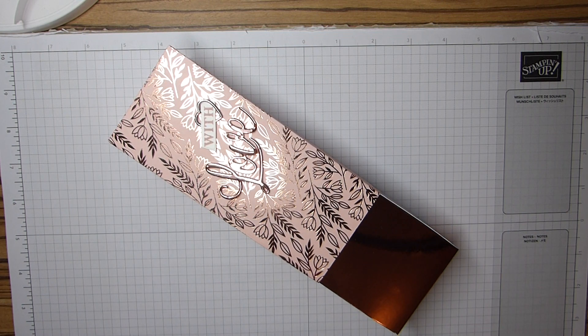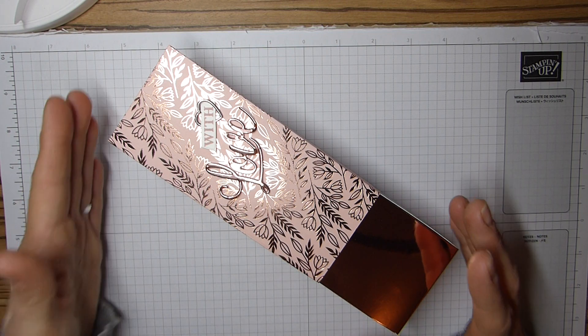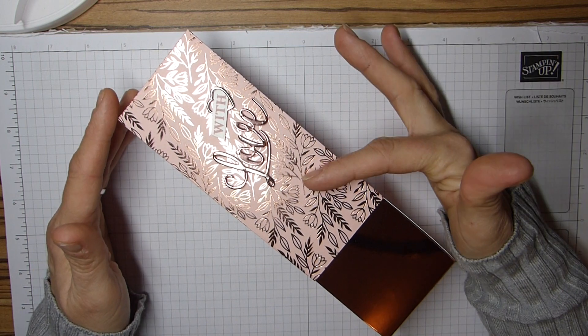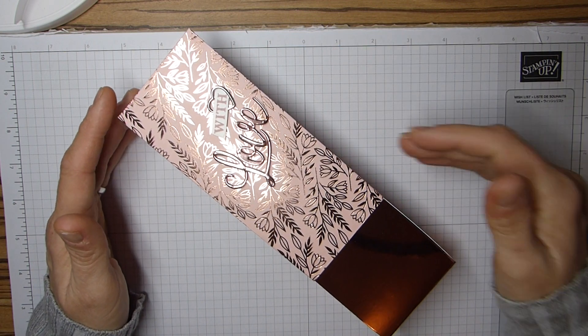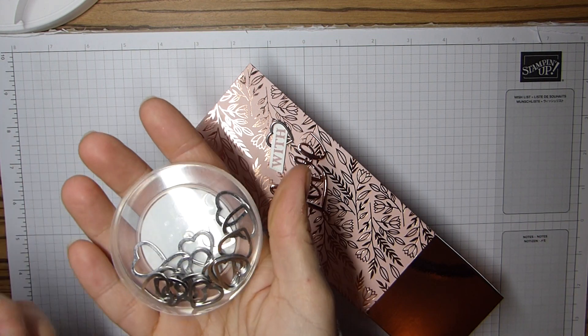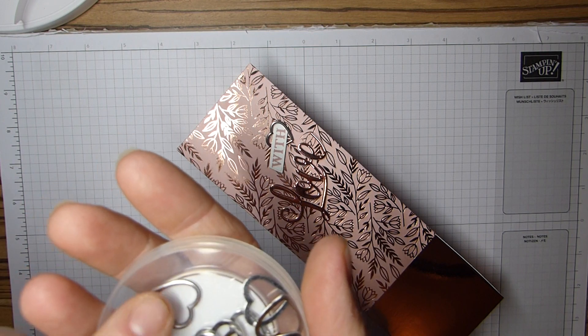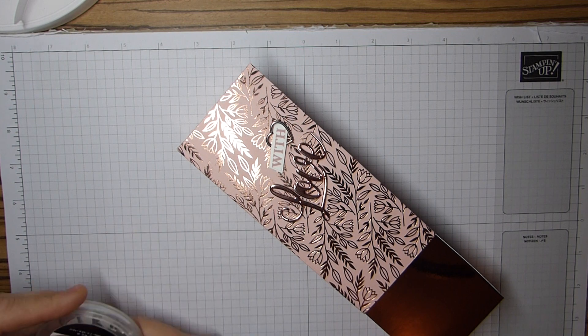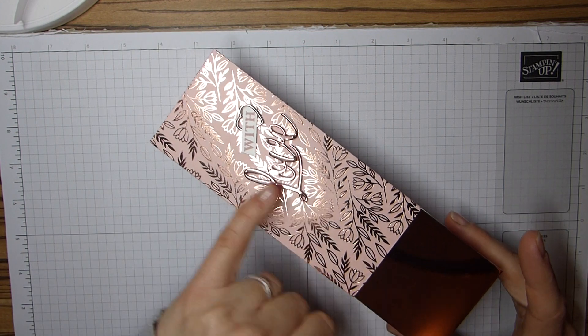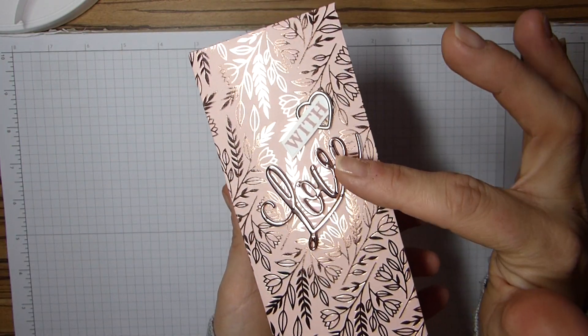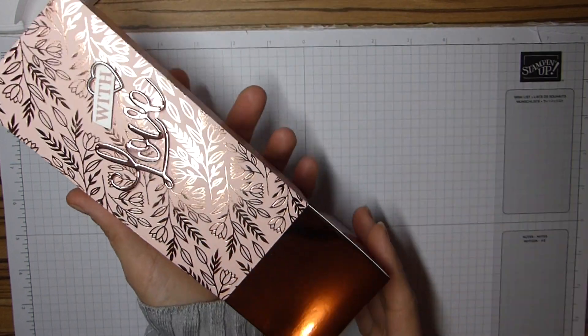So this is from the Love You Always Suite in the new catalogue. It is just divine. I have used the Love You Always foil sheets and the Love You Always DSP. These are gorgeous heart charms. Those are the flat sides, but they have a raised side as well. I've used the same foil paper here as I have on this beautiful little sentiment. It is just so cute.